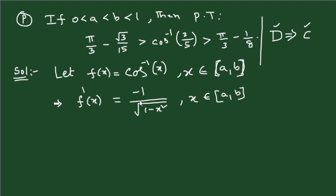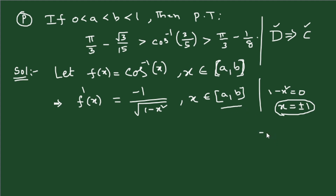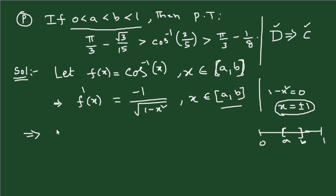The derivative of cos⁻¹(x) is minus 1 divided by √(1 − x²). The troubling points of f'(x) are where the denominator becomes 0, i.e., where 1 − x² = 0, giving x = ±1. But do we have ±1 in the given interval? No, because 0 < a < b < 1 means a and b lie strictly between 0 and 1, so ±1 cannot appear in the interval (a, b).